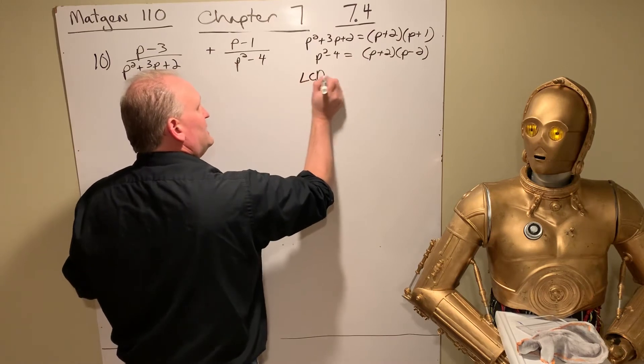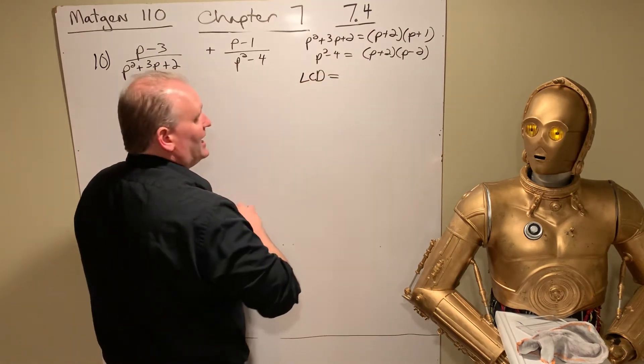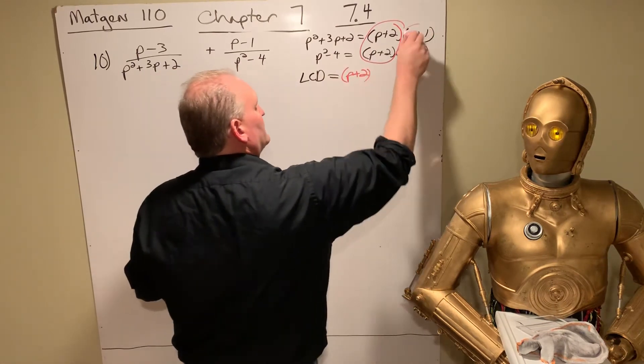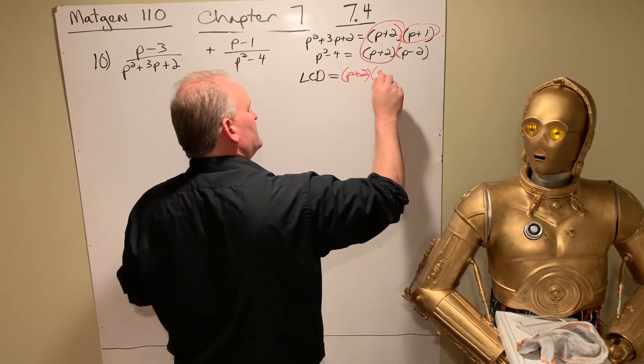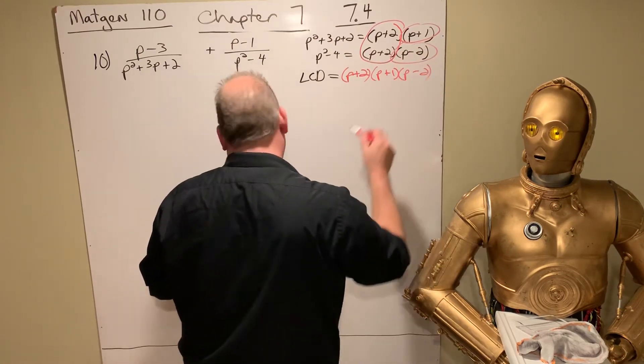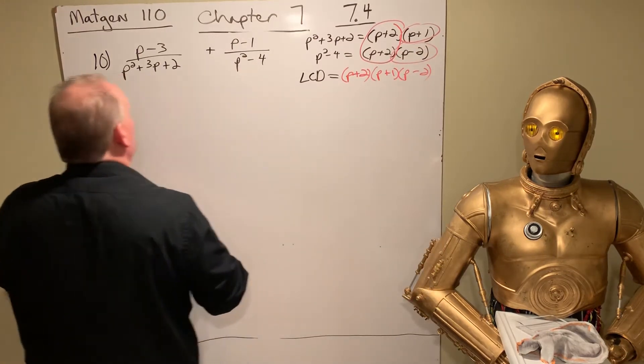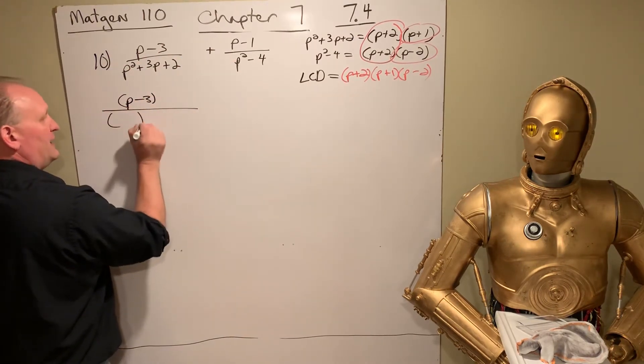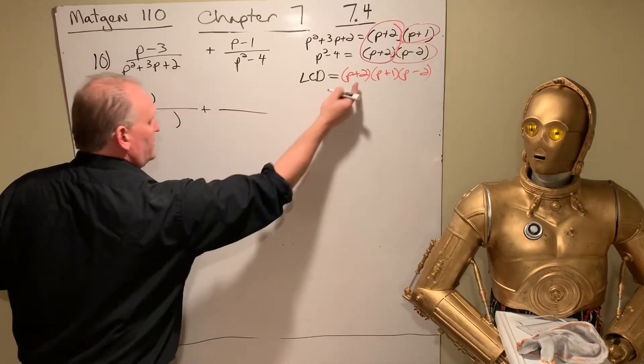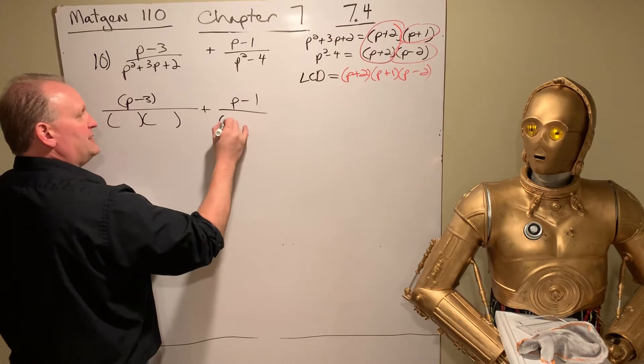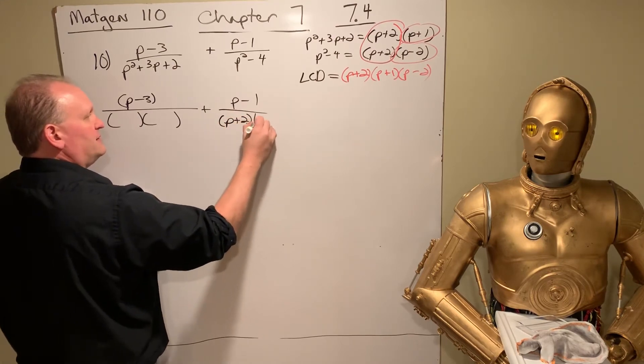And P squared minus 4. That's going to be P plus 2P minus 2. Difference of squares. So the LCD. First, what they have in common. They both have a P plus 2. And then the leftovers. This counts as a leftover. P plus 1. This counts as a leftover. P minus 2. So now, do yourself a favor. Rewrite it. Now, P minus 3. Write it out in factored form before you jump to the LCD step.